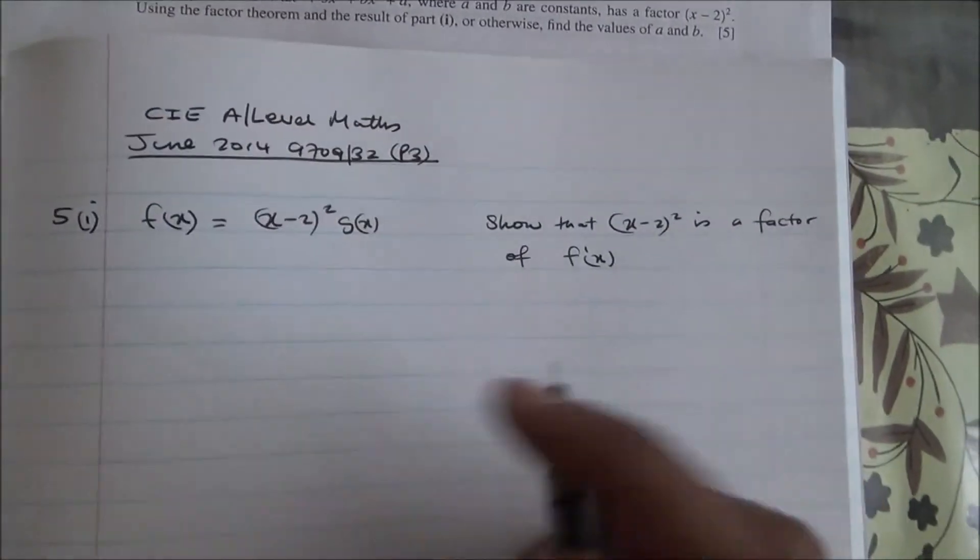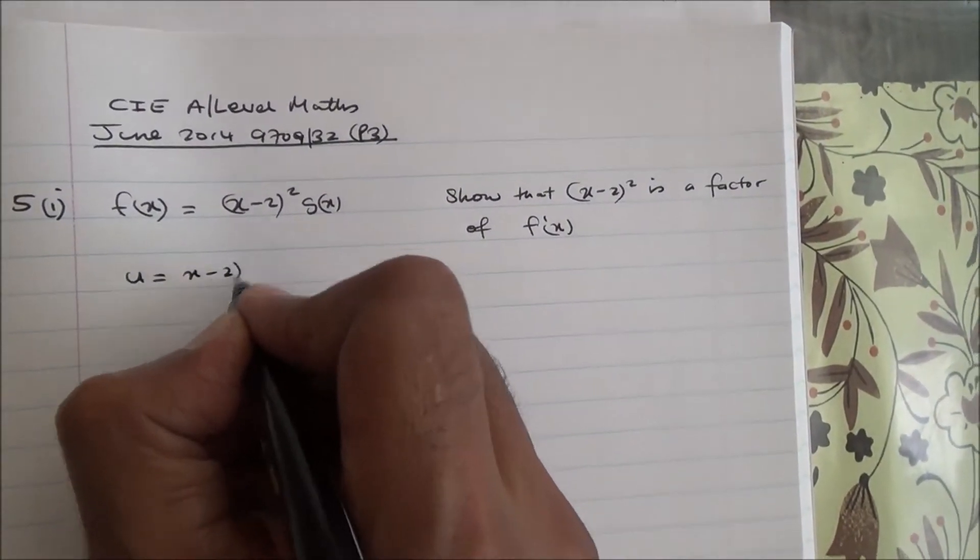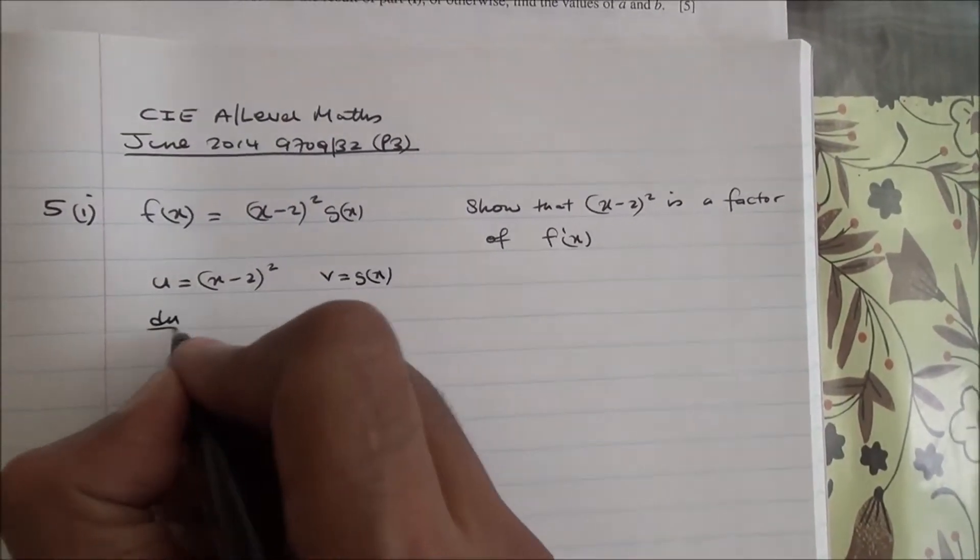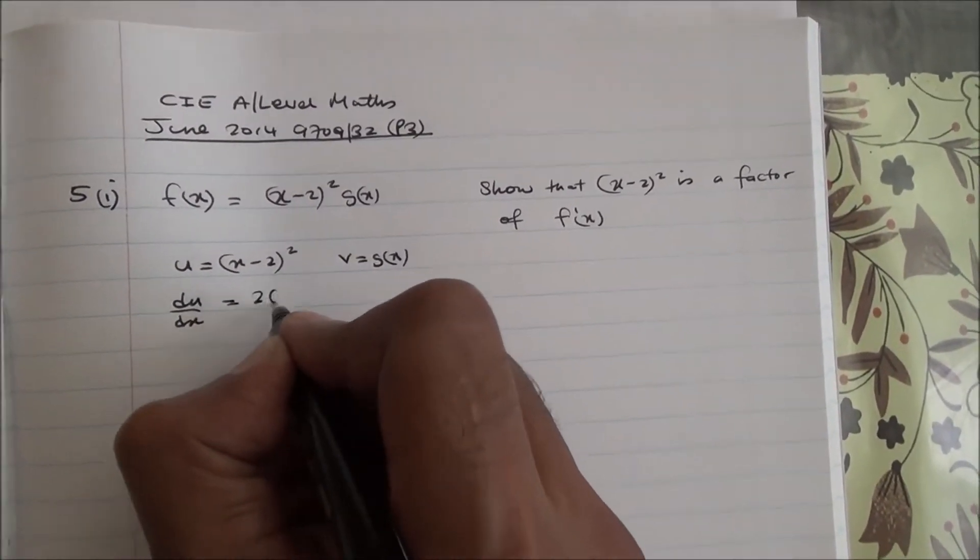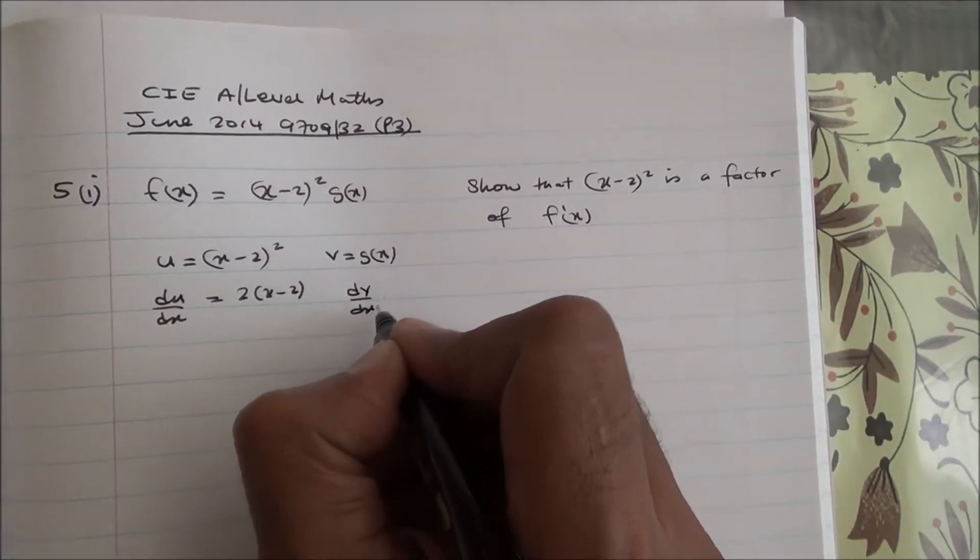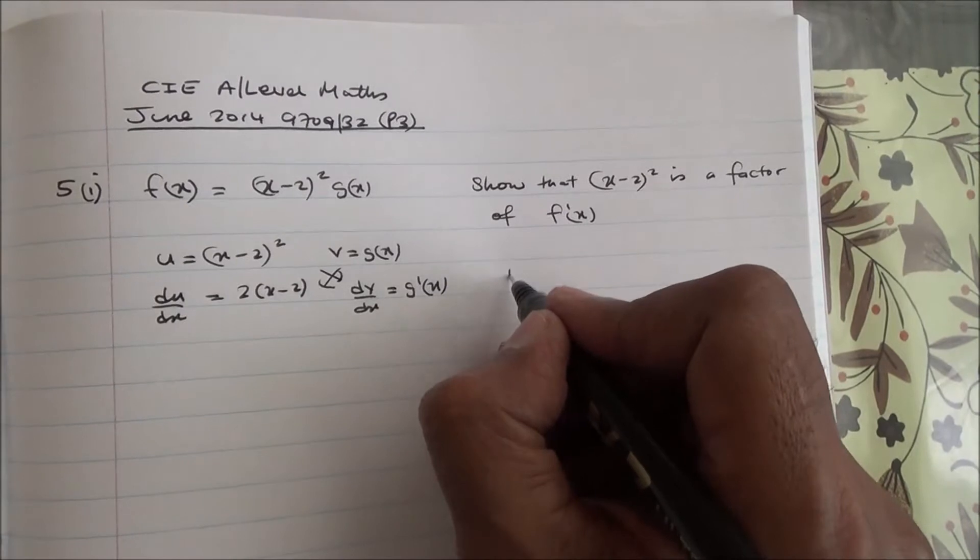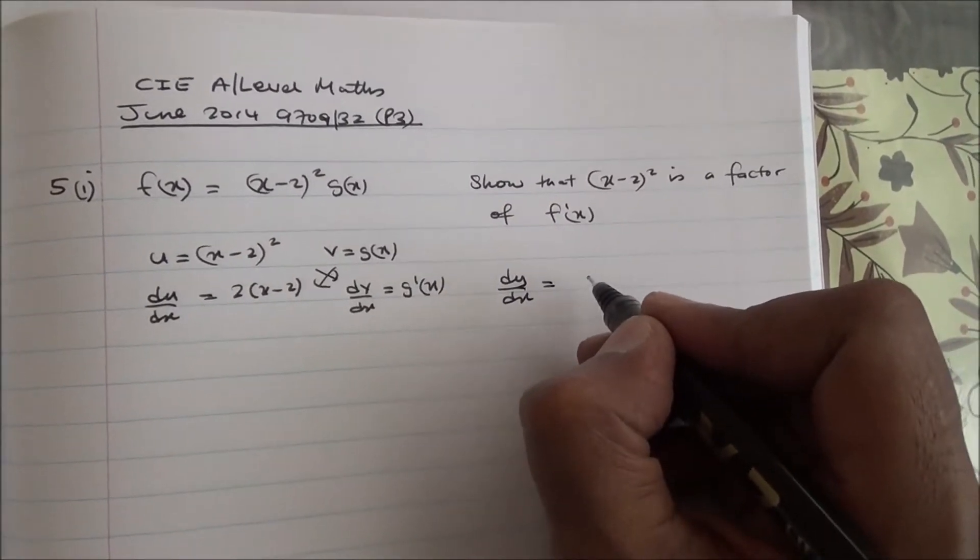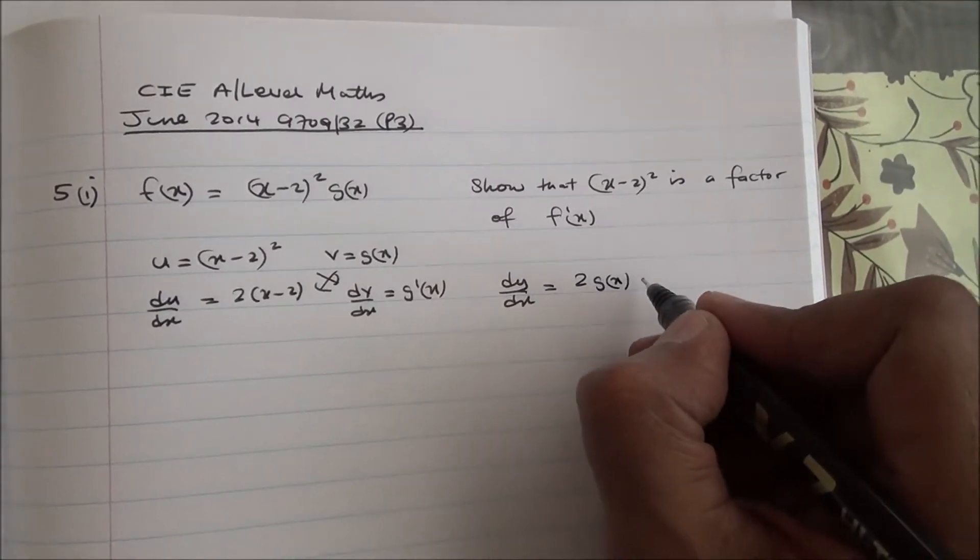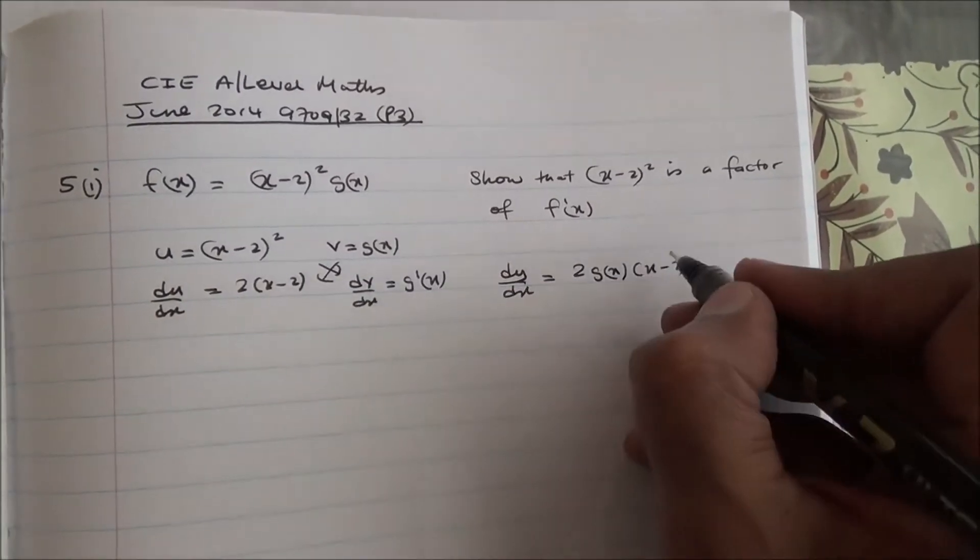Now, for the first part, we need to show that (x-2)² is a factor of this. But first of all, we'll call u = (x-2)² and v = g(x). Differentiating that, you're going to get du/dx = 2(x-2)·1, and dv/dx is going to give you g'(x). So, v·du/dx + u·dv/dx is going to equal dy/dx, which is f'(x), basically. So that's going to be 2g(x)(x-2), this times that,